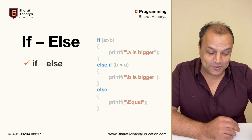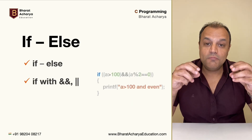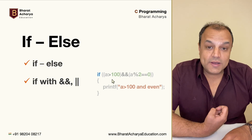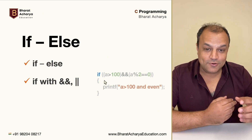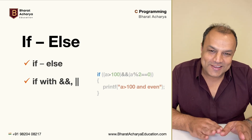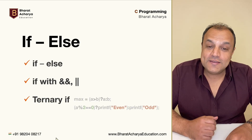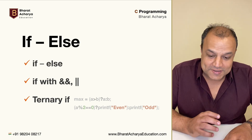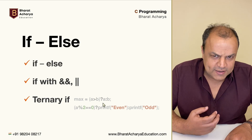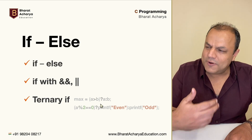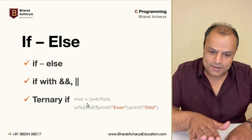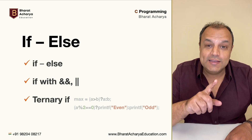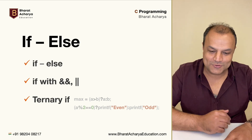I'll be showing you this with coding examples. There are other forms of if where you combine multiple conditions — you can combine with an AND, combine with an OR, or a bunch of ANDs and ORs depending on how complex your logic is, and I'll show you how this works with an example. Finally, there's something called the ternary if. This is very popular in GATE exams or any competitive exam, though most programmers don't use it often in day-to-day practical life.